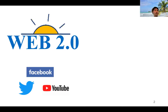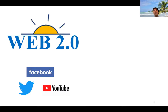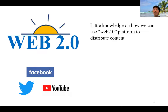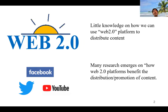The key feature of web 2.0 is that it has social media platforms enabling users to generate and distribute content on their own. Before web 2.0, most internet content was generated by major organizations and news media. With platforms like Twitter, Facebook, and YouTube, common people are able to distribute and generate content. At the time, there was little knowledge about how to use web 2.0 platforms, and a lot of research emerged on how these platforms benefit the distribution and promotion of content.